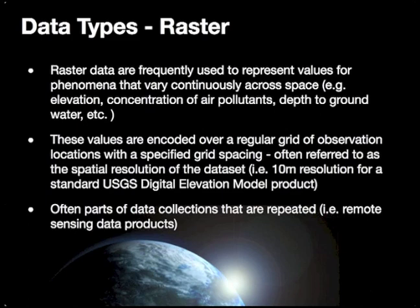Raster data, on the other hand, are frequently used to represent data that vary continuously across space. Elevation is one good example. Raster data are often represented as data in a regular grid, where the grid spacing is defined in terms of the resolution of the raster dataset. For example, a 10-meter resolution digital elevation model includes values of elevation at 10-meter intervals as they vary continuously across space — essentially regular sampling or summarization of values as they vary across space.